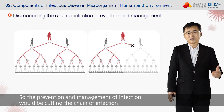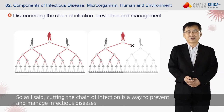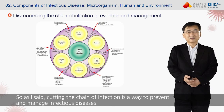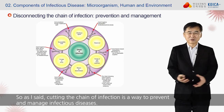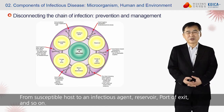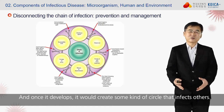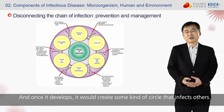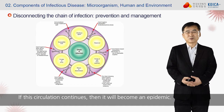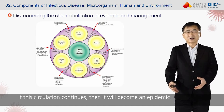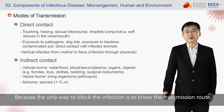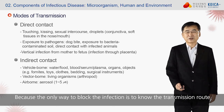The prevention and management of infection involves cutting the chain of infection — from susceptible host to infectious agent, reservoir, port of exit, and so on. Once it develops, it creates a cycle that infects others. If this circulation continues, it will become an epidemic. The only way to block infection is to know the transmission route.